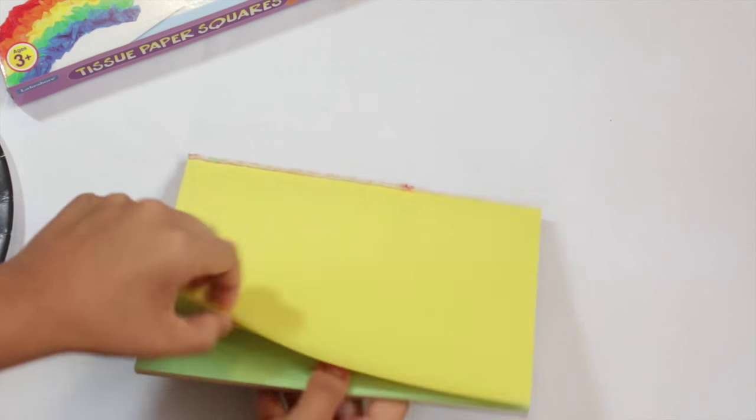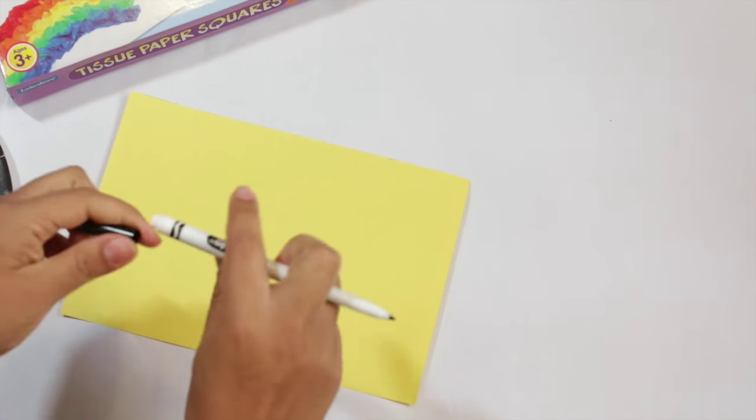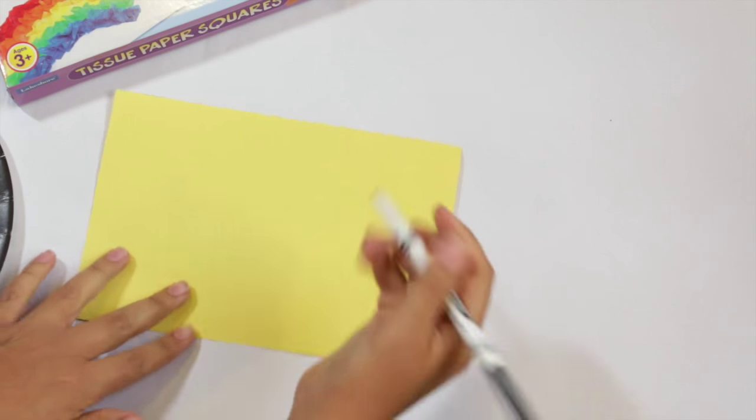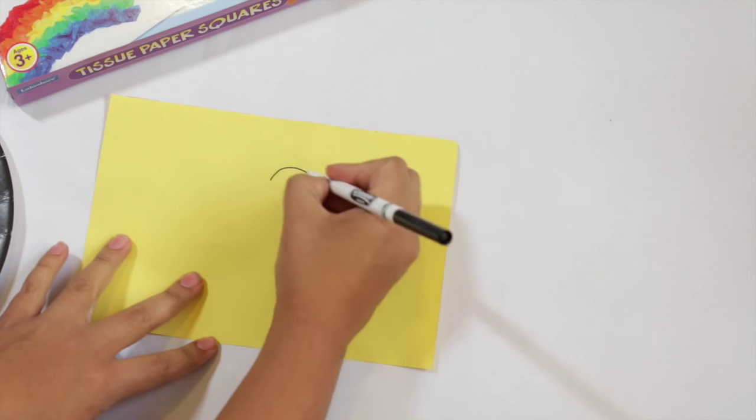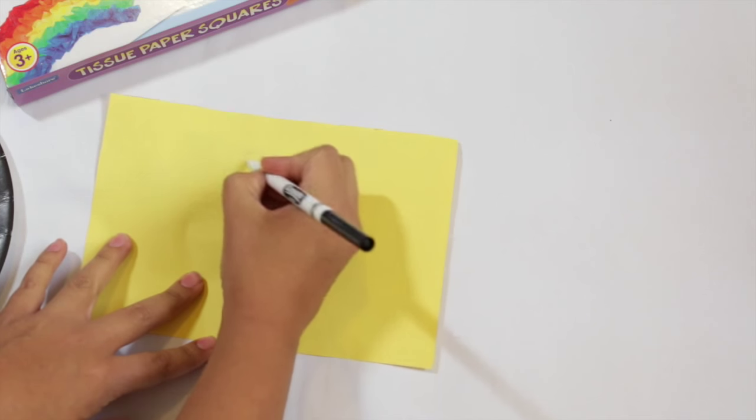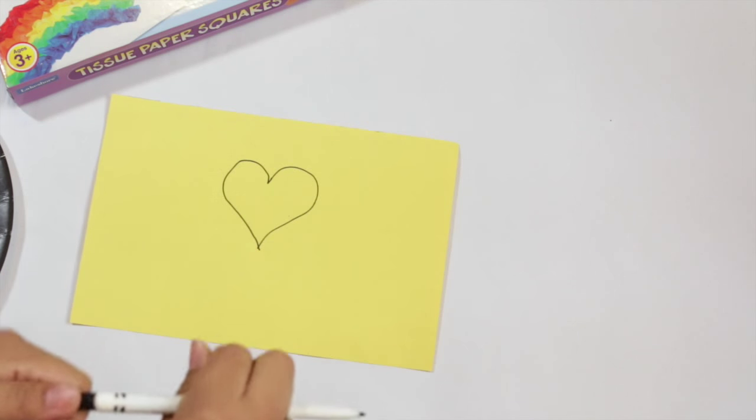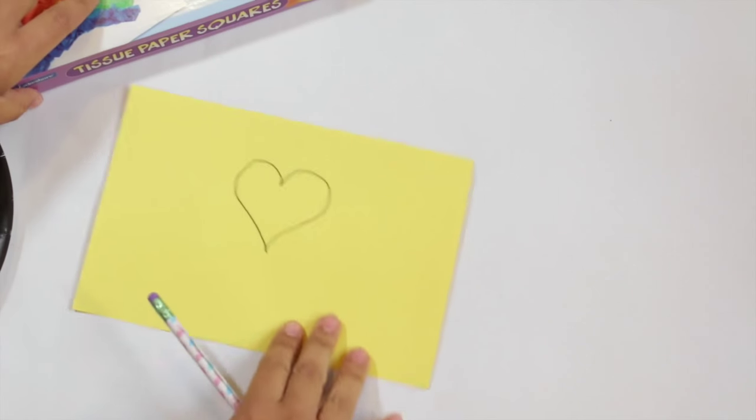Then I'm just going to take a piece of paper and a marker. And you can do any shape, any kind of thing you want. For sake of simplicity I'm going to do a heart, any size you want. You can do a whole bunch of them and cut them out for garland.